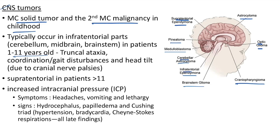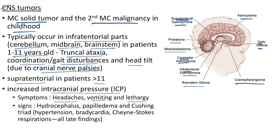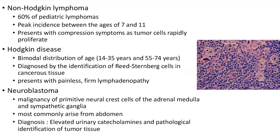In children 1-11 years, CNS tumors typically occur in infratentorial parts (cerebellum, midbrain, brainstem) causing truncal ataxia, coordination or gait disturbances, and head tilt due to cranial nerve palsies. In children older than 11 years they occur in the supratentorial part. CNS tumors present with raised ICP: headaches, vomiting, lethargy; signs include hydrocephalus, papilledema, and Cushing's triad (hypertension, bradycardia, Cheyne-Stokes respiration) — all late findings.